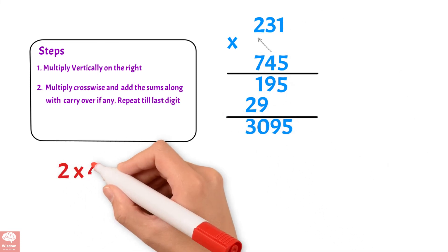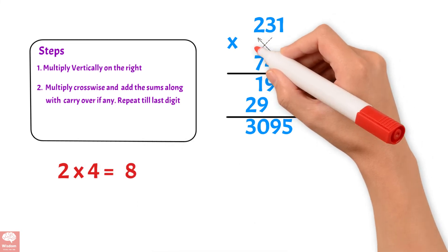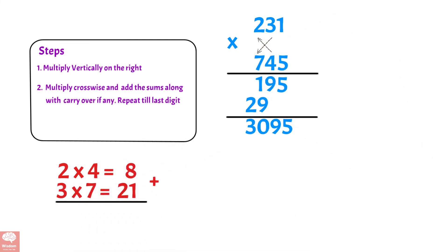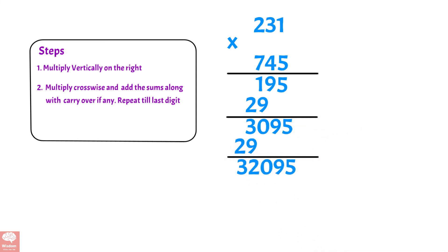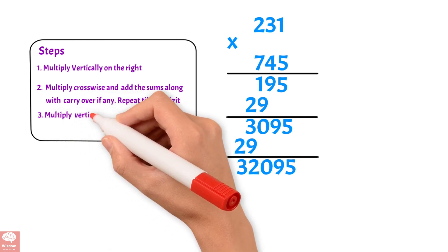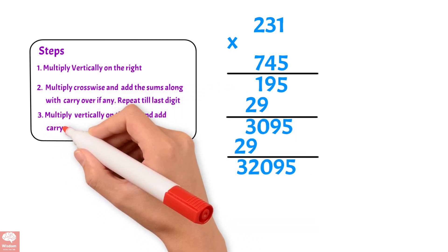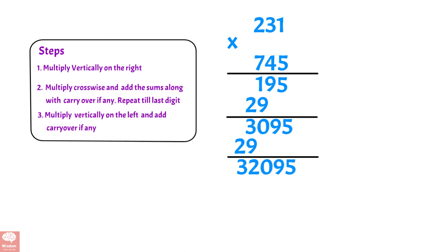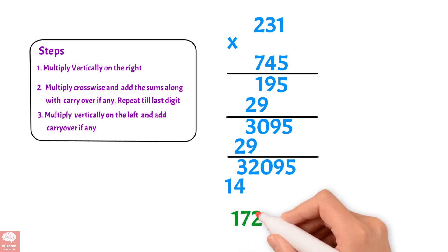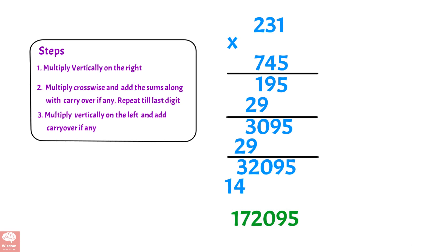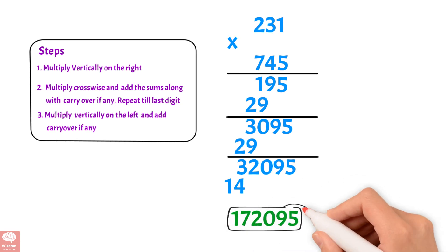2 times 4, we get 8. 3 times 7, we get 21. Adding 8 plus 21, we get 29. Adding the carryover 3 to 29, we get 32095. Step 3: Multiply vertically on the left and add carryover if any. 2 times 7, we get 14. Adding the carryover 3 to 14, we get 172095. So 172095 is the answer.